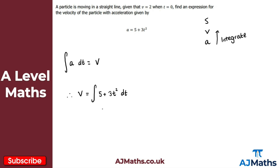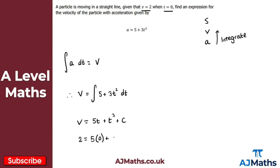The integration here should be nice and straightforward. So for v I'm going to get 5t, and then 3t cubed over 3, which is plus t cubed. Now again we're integrating with no limits, so we need our constant of integration: plus c. But we have boundary conditions — v equals 2 when t equals 0. Substituting in: 2 equals 5 lots of 0 plus 0 cubed plus c, so the first two terms are 0, giving us c equals 2.